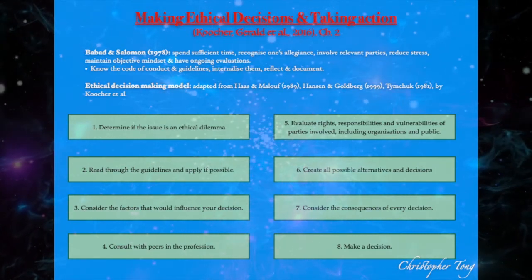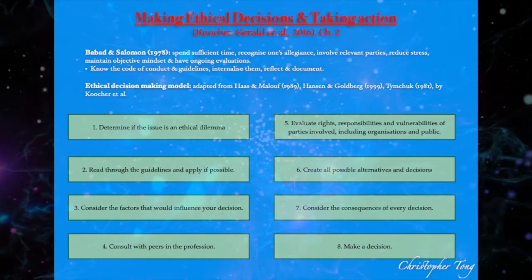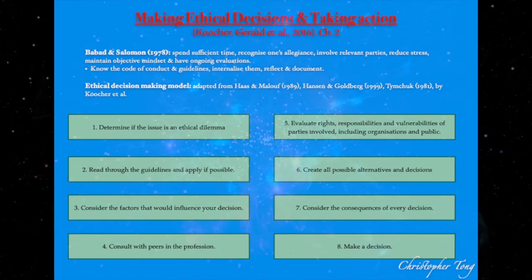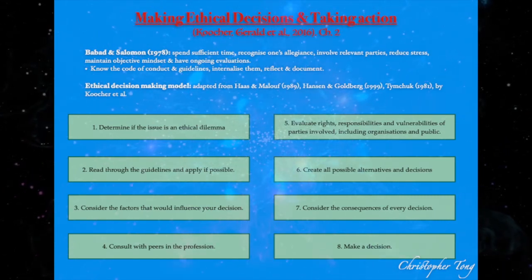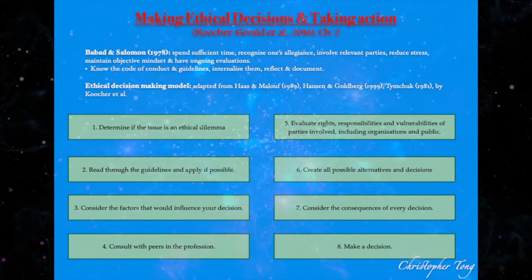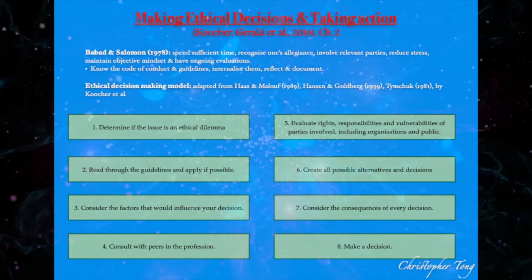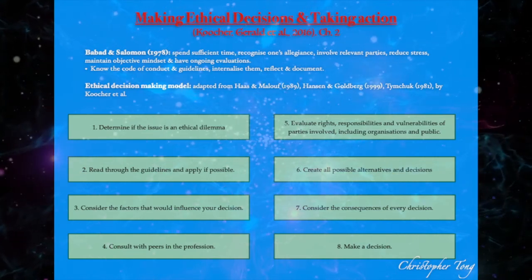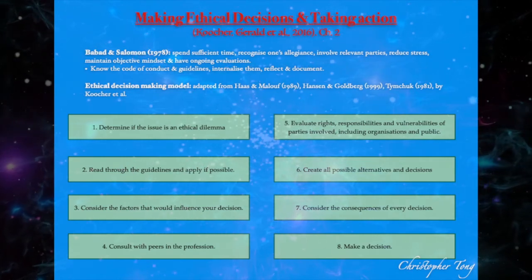Step 3: Consider the factors that would influence your decision. Persist in introspection to recognize possible personal biases, as well as clients' own appearances, social statuses, and affiliations, which could impact your ability to make ethical choices. This could include one's own personality, moral or religious principles, values, personal goals, responsibilities, culturally relevant variables, etc., which can influence the decision.